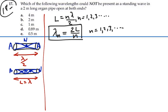So in this particular case, if we're looking for possibilities for a pipe that is two meters long, we're going to have two times two over n or four divided by n where n, of course, is an integer.